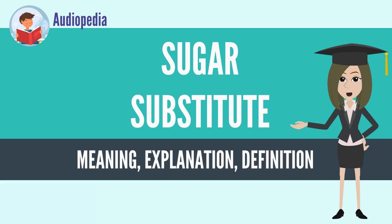In 2017, sucralose was the most common sugar substitute used in the manufacture of foods and beverages. It had 30% of the global market and was projected to be valued at $2.8 billion by 2021.